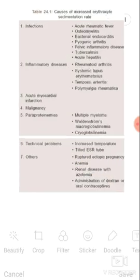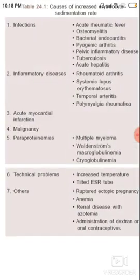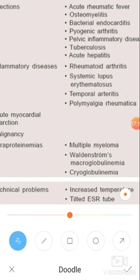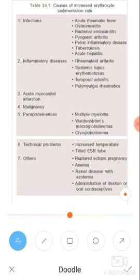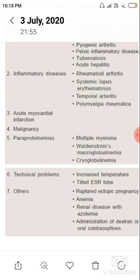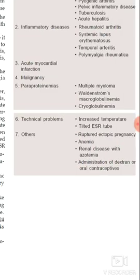As a recap, the important causes of elevated ESR are: rheumatic fever, tuberculosis, rheumatoid arthritis, systemic lupus erythematosus, multiple myeloma, myocardial infarction, malignancy, anemia, and pregnancy.